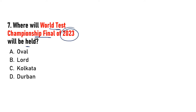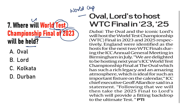Next: World Test Championship Final 2023 kahan hogi? Options: The Oval, Lord's, Kolkata, ya Durban. Ek World Cup hota hai one-day matches ka, aur ab Test Championship bhi hone lagi hai. Answer The Oval hoga.